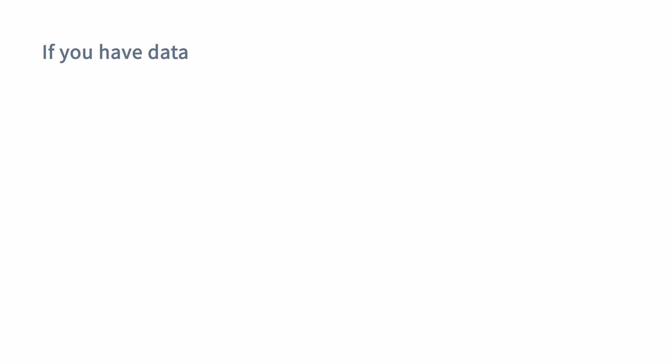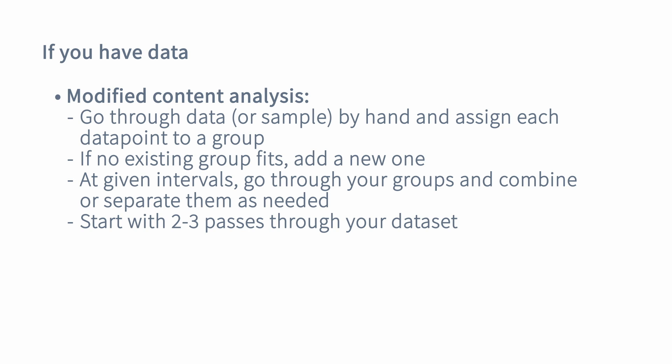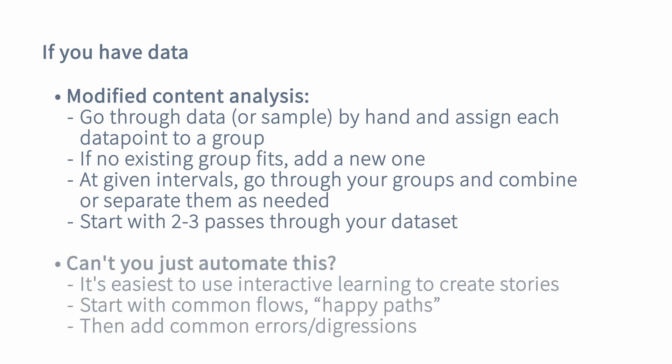If you have user data — such as forum questions or conversational interactions — I would recommend using what's called a modified content analysis, a method from qualitative research. You go through your data by hand, look at each data point, and give it a label; if there isn't an existing label, create a new one. At given intervals — maybe once an hour or every 100 data points — go through your groups and recombine them as necessary. Start with two to three passes through your whole dataset or a sample of it.